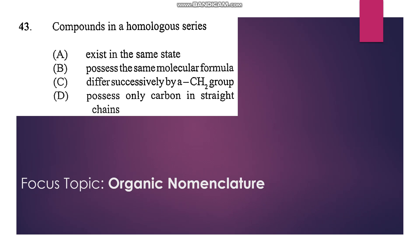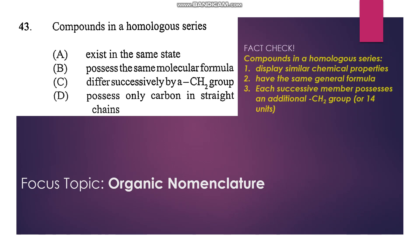43: Compounds in a homologous series—they are similar in chemical properties, they do not exist in the same state, they don't possess the same molecular formula, they differ by a CH2 group. That's true, so that's C.